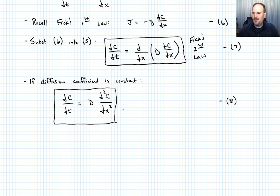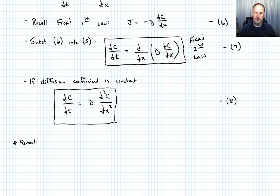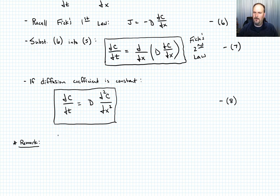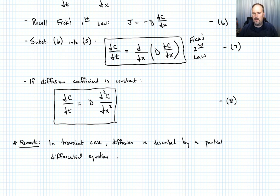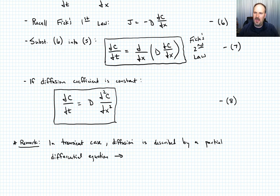You likely have not seen this class of problems in your mathematics background. In the transient case, our solution for how the concentration changes is described by a partial differential equation. Unlike an ordinary differential equation with a fixed and systematic solution technique, the solution here is complicated and the approach depends on the boundary conditions.